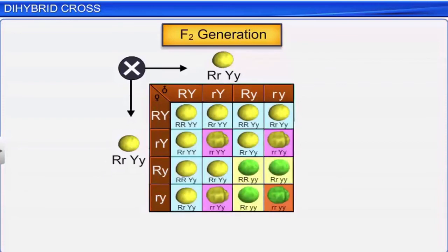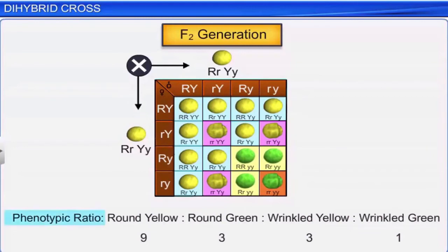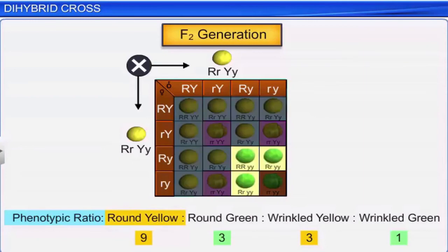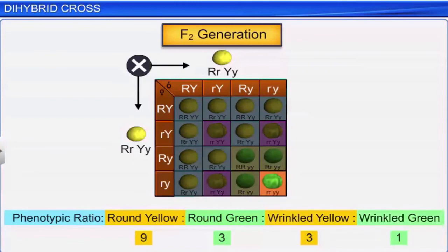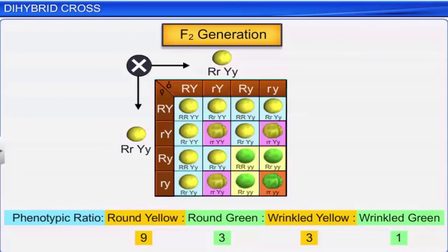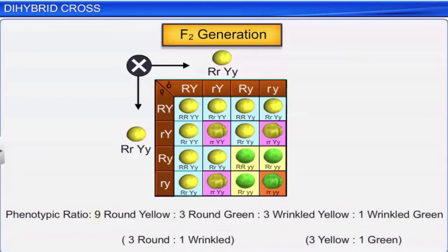Mendel also found that the phenotypic ratio in the F2 hybrid was 9:3:3:1. That is, there were 9 round yellow seeds, 3 round green seeds, 3 wrinkled yellow seeds, and 1 wrinkled green seed. Mendel obtained this same phenotypic ratio in several dihybrid experiments. This ratio 9:3:3:1 can be derived as a combination series of 3 yellow : 1 green with 3 round : 1 wrinkled.